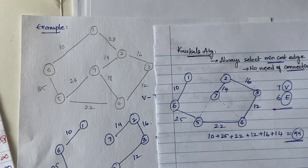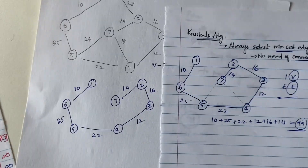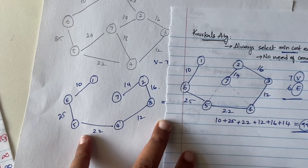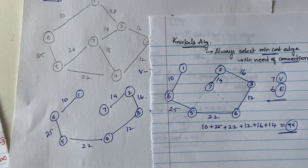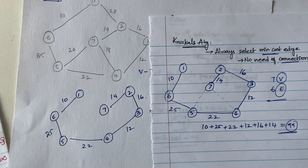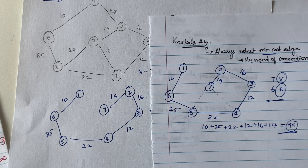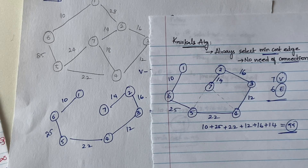The total cost for Kruskal's spanning tree is 10 plus 25 plus 22 plus 12 plus 16 plus 14, which equals 99. Both Prim's and Kruskal's algorithms give the same minimum cost of 99. So it doesn't matter which algorithm you use in this case. I hope this video is clear. In the next video we'll look at the single source shortest path problem. Thanks for watching!